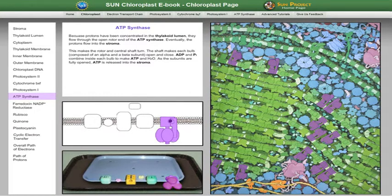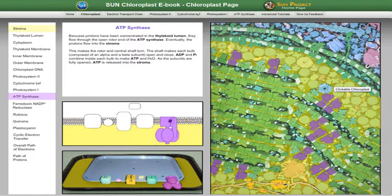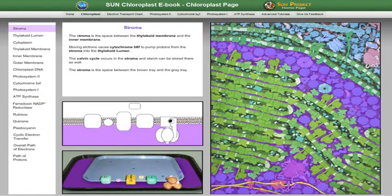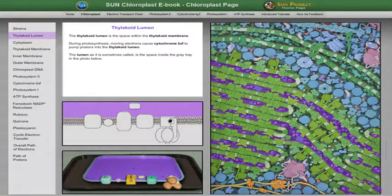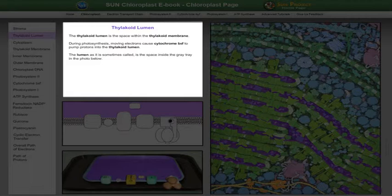Notice that as you mouse over and select components in one image, they are highlighted as well in the other images. Here is the thylakoid lumen. Notice that its description appears here as well when it is selected.